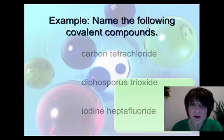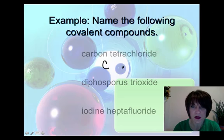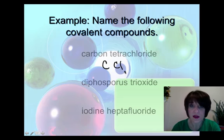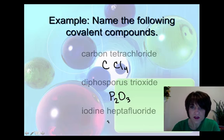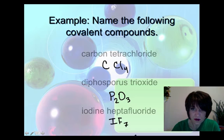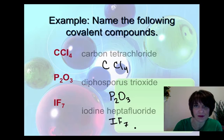For the examples, let's try writing formulas from these names. Carbon has the symbol C, and chlorine has the symbol Cl. The prefixes tell us how many of each to use. It doesn't say monocarbon — that would be redundant — so carbon tetrachloride gives us CCl₄. Diphosphorus trioxide: di is two, so two phosphorous atoms, and tri is three oxygens, giving us P₂O₃. Iodine heptafluoride: iodine is I, fluorine is F, and hepta stands for seven — so IF₇.